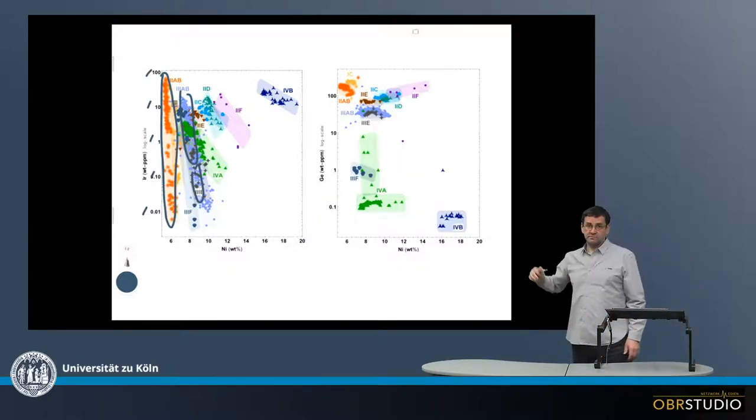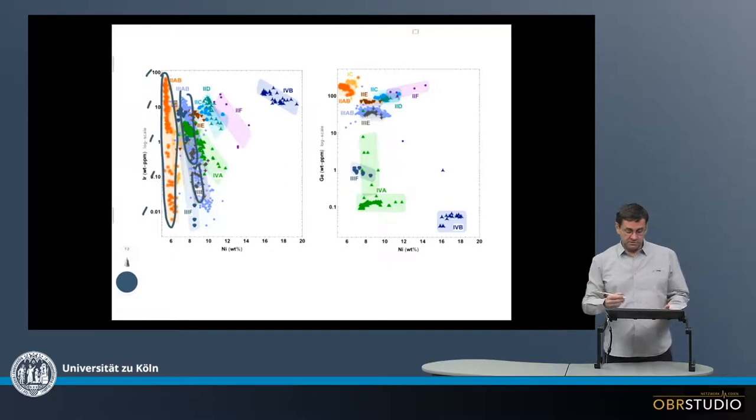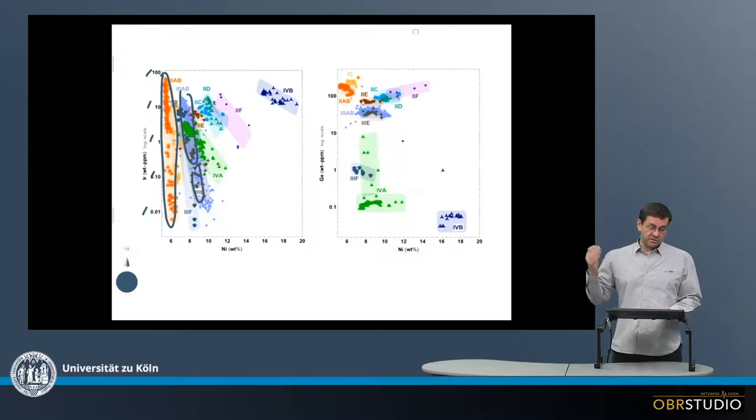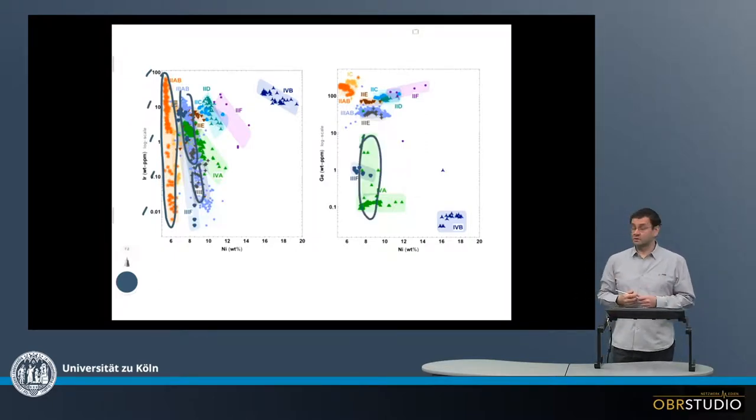The ranges are a little bit smaller in the germanium plot, but still comparatively large, because this is a log scale. For example, the 4A have rather large ranges here.